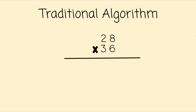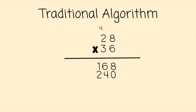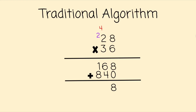Lastly, we're going to talk about a traditional or standard algorithm. It looks like the partial product strategy but it's actually quite different. We begin multiplying in the ones column: 8 times 6 is 48, but that 4 can't go there — it represents 40 and belongs in the tens column. 6 times 2 is 12, plus 4 is 16. As we move to the tens column, we need to put a 0 on the next line. 3 times 8 is 24, but that 2 can't go there, so it goes up in the tens column. 3 times 2 is 6, plus 2 is 8. Adding these together: 8 in the ones, 6 plus 4 is 10, bring the 1, then 8 plus 1 is 9, plus 1 is 10 — for a final product of 1008.